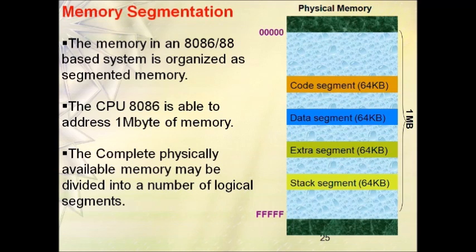Why do we use only 64 kilobytes as the segment size? Because here we have 16-bit registers for accessing the memory. Since we have 16-bit registers, we can only access up to 64 kilobytes with them. That is why each and every segment size is 64 kilobytes. The complete 1MB memory is divided into 16 logical segments, because 64 kilobytes × 16 equals 1MB.